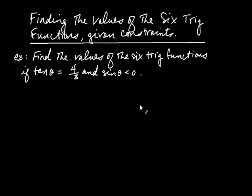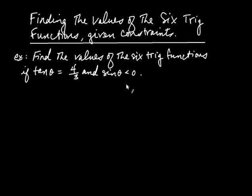Here we're going to find the values of the six trig functions given constraints. All we mean by constraint is an extra condition that has to be taken into consideration in the problem. Find the values of the six trig functions if tangent of the angle is four-thirds and sine of the angle is less than zero. We're not given the value of the angle — just some information about it. We know that you can find the values of the six trig functions if you know x, y, and r, where r is the radius of the circle.